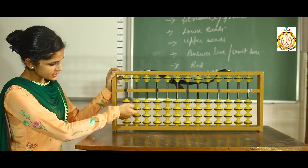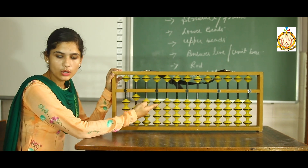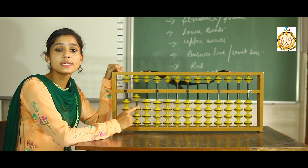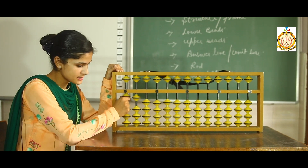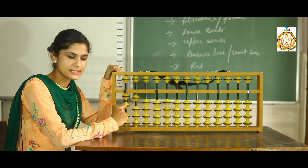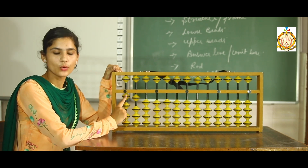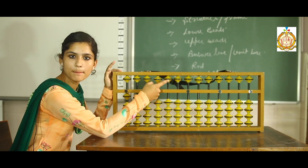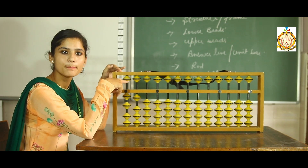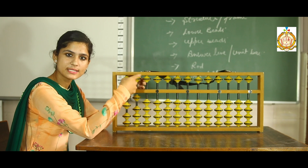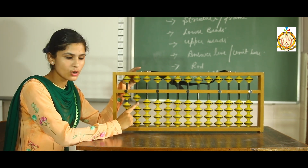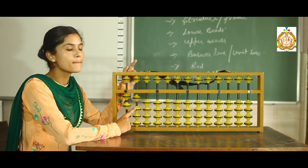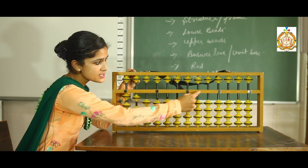The second part is lower beads. These beads you are seeing here are called lower beads, and another name for lower beads is earth beads. If a question asks which beads are called earth beads, the answer is lower beads. The third part is upper beads. These beads are called upper beads, and another name for upper beads is heaven beads.